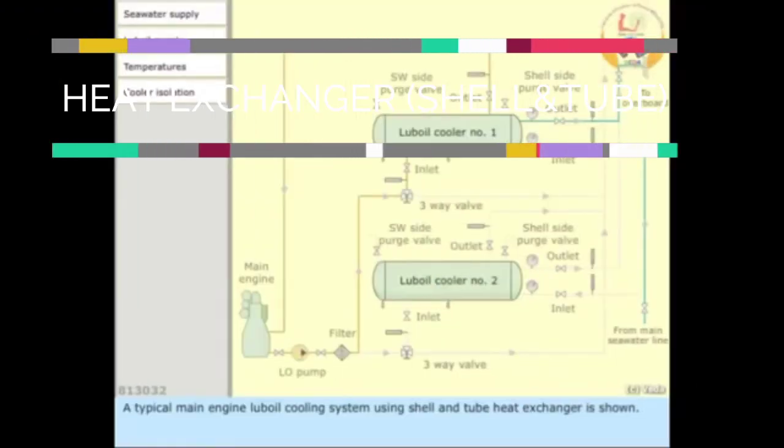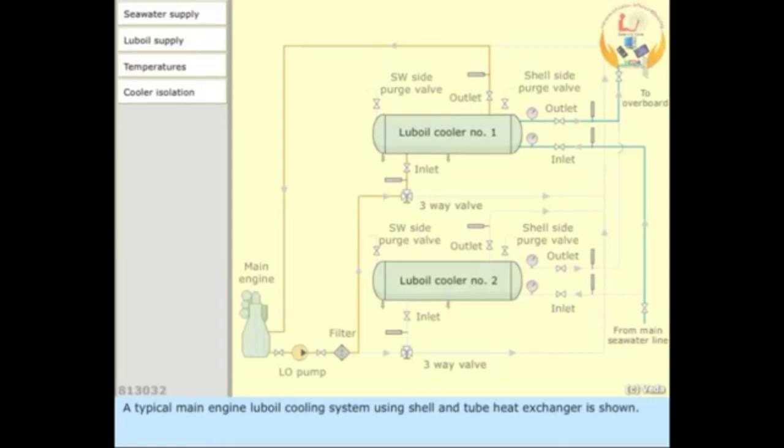A typical main engine lube oil cooling system using shell and tube heat exchanger is shown. The sea water flows through the tubes and lube oil flows inside the shell of the cooler.